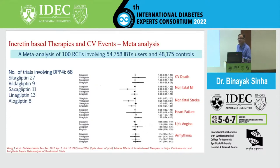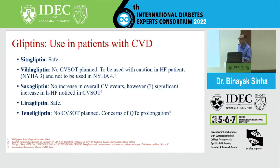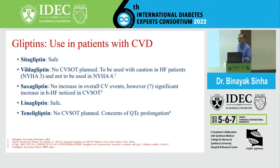Where do gliptins fit in cardiovascular disease? Sitagliptin and linagliptin are completely safe and can be used across the board in all patients irrespective of their cardiac status. Vildagliptin has no data, and VIVID trials indicate an increased risk of diastolic dysfunction. Saxagliptin and alogliptin have noise about heart failure. Trelagliptin has no data but shows definite increased QT prolongation.